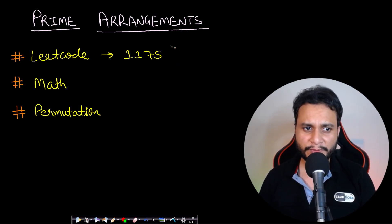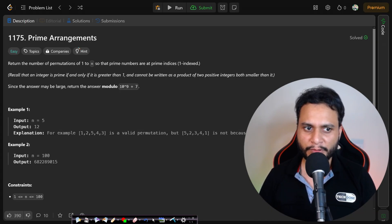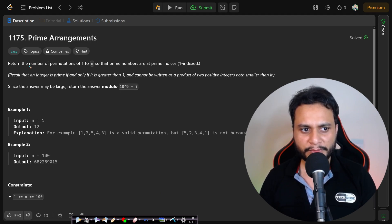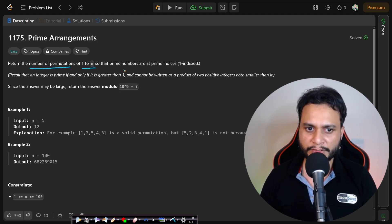Hello guys, welcome back to TechDose. In this video we'll see the Prime Arrangements problem, which is LeetCode number 1175. Let's first look at the problem statement. We are asked to return the number of permutations of 1 to n so that prime numbers are at prime indices, and the index is one-based. Since the answer may be very large, we take modulo 10 to the power 9 plus 7.